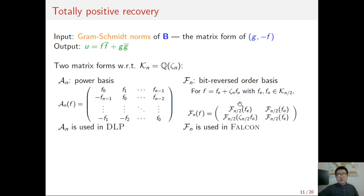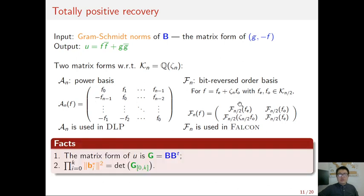For these two matrix forms, we have some common facts. First, the matrix form of U is a Gram matrix B·Bᵀ. Second, the product of the first k squared Gram-Schmidt norms equals the determinant of the k-th leading block of the matrix form of U. Next, let's discuss the recovery problem for each matrix form respectively.